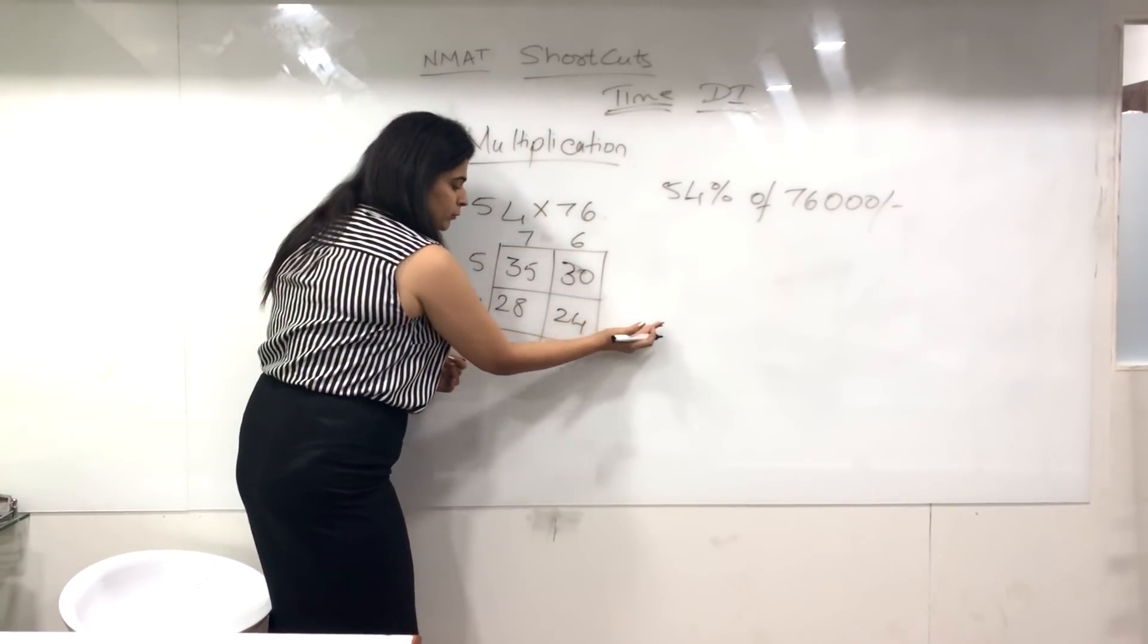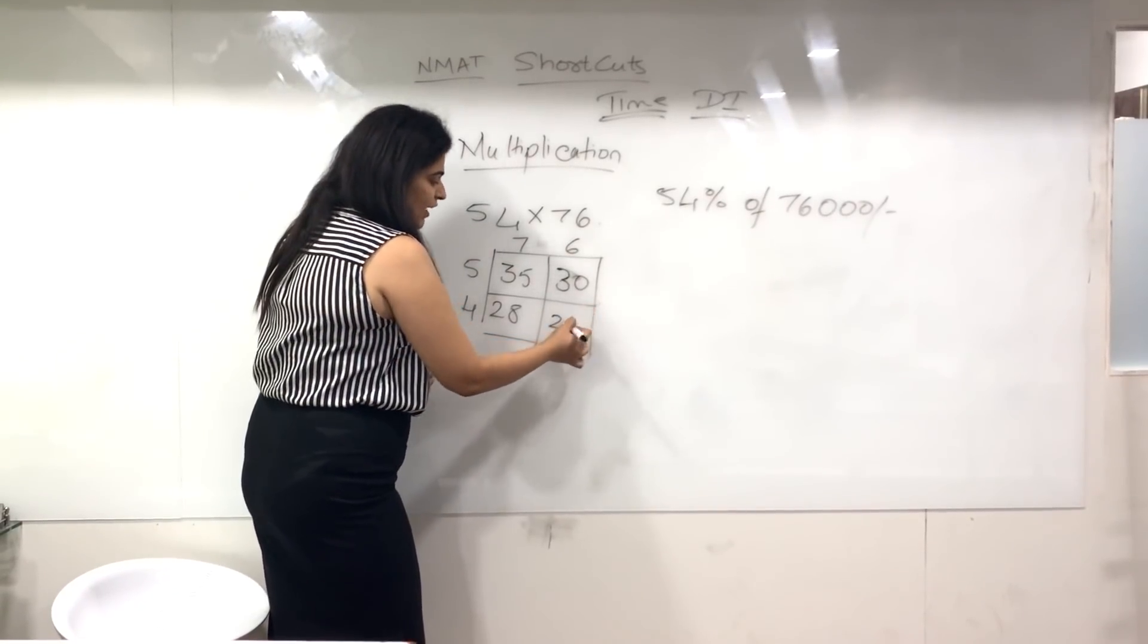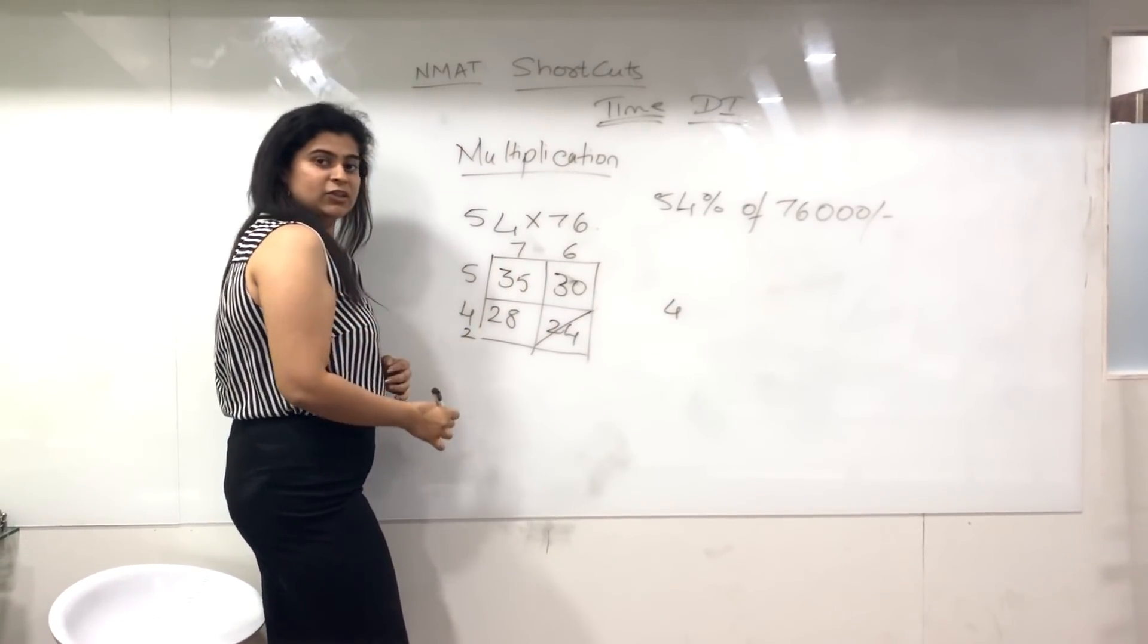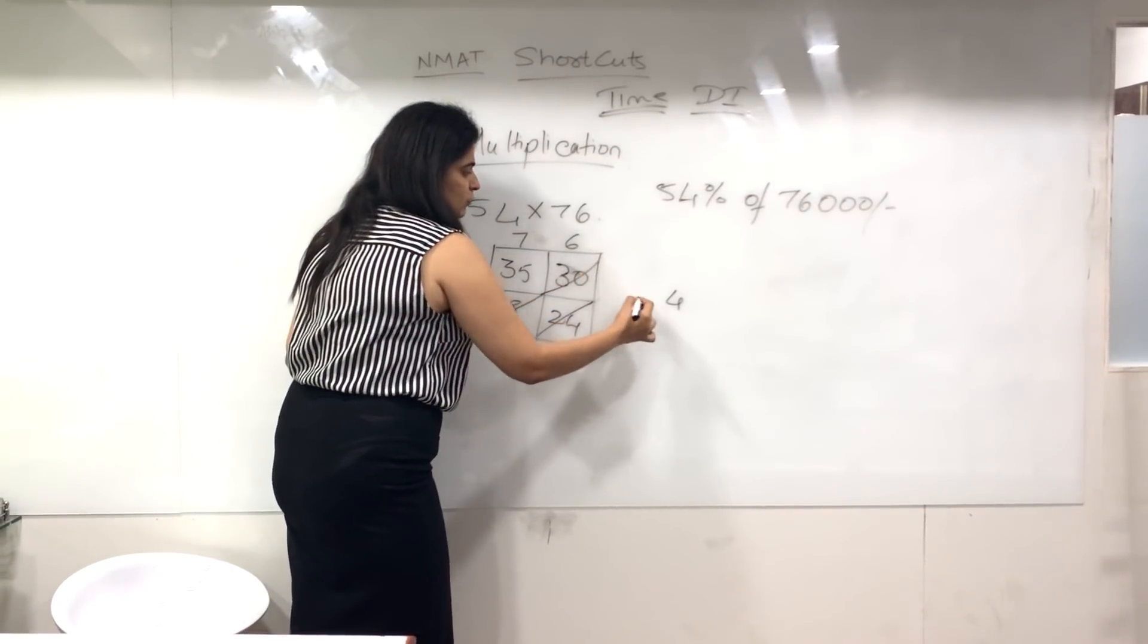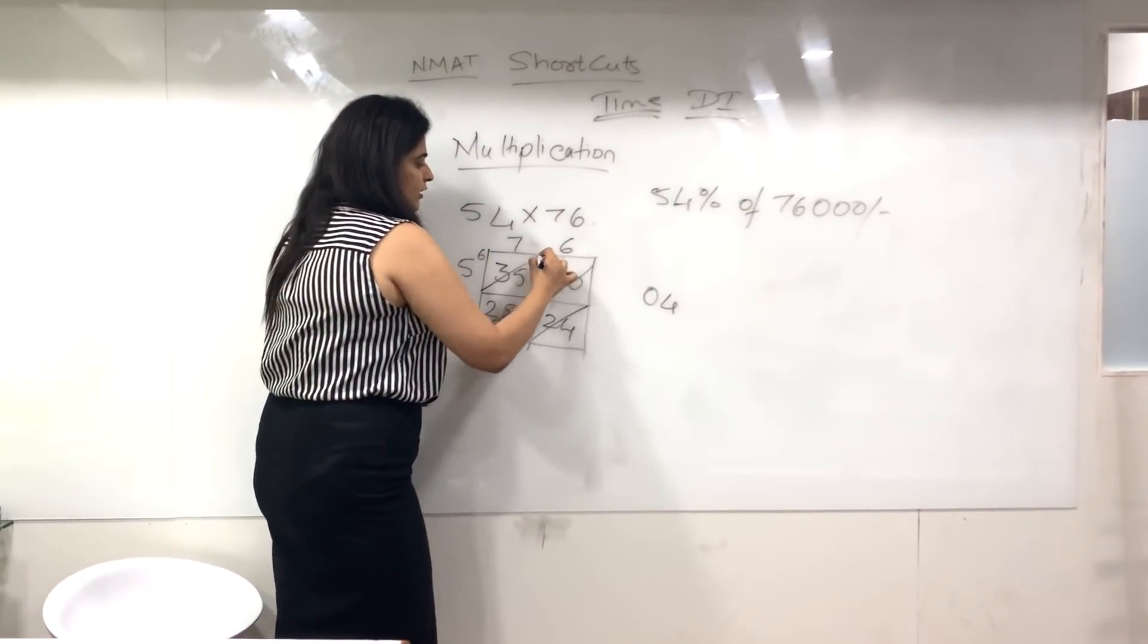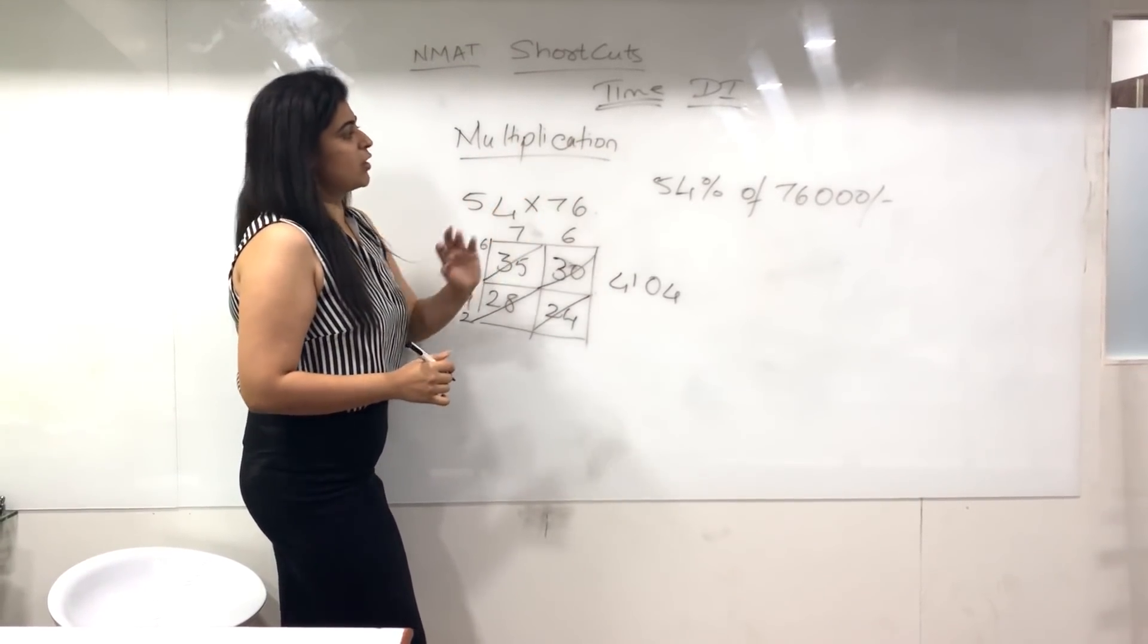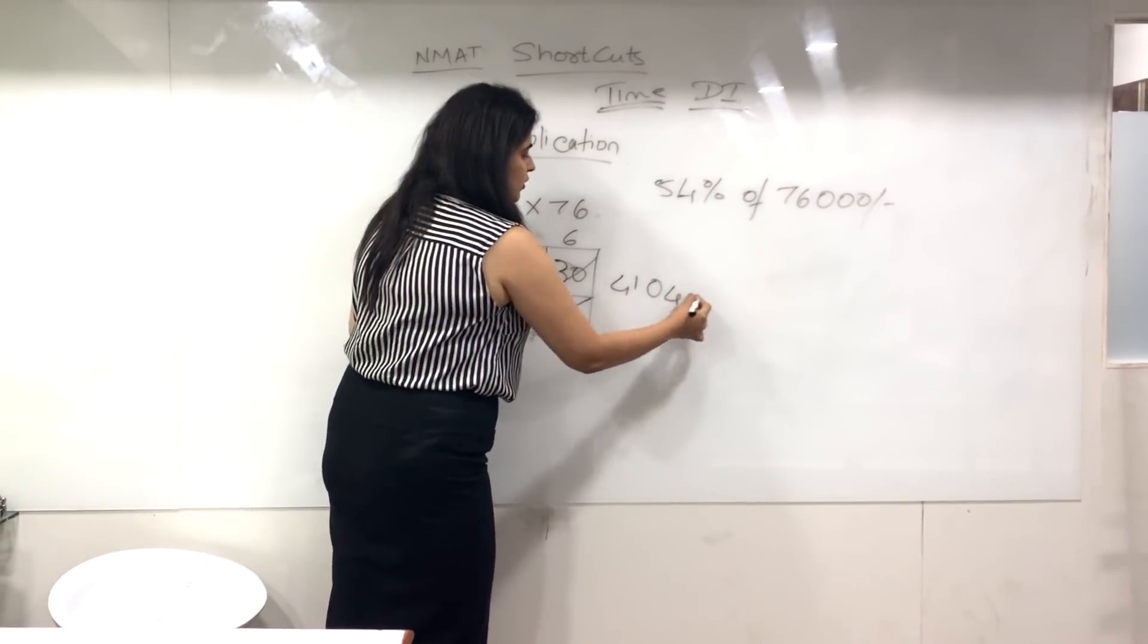Now to get your final multiplication answer, from the bottom edge keep adding all the diagonals up. Add this one: 24—write only the units digit, 4. 2 gets carried forward to the next diagonal, making 2 plus 28 is 30 plus 30 which is 60, so write 0 here. 6 is carried, so 6 plus 35 is 41. That's your final answer. Since this was 54% of 76,000, just add one more zero—that becomes your final answer.